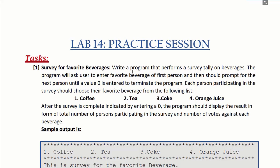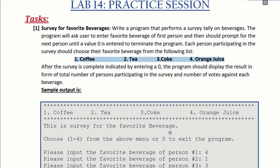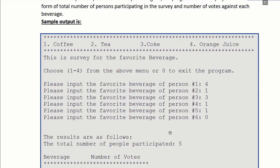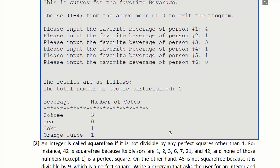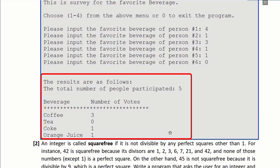If you see the lab manual, the first task is about a survey for favorite beverages. Your program will ask the user to enter the favorite beverage of the first person, then for the second person, and so on until a value 0 is entered to end the survey. There are four beverages in the list: coffee, tea, coke, and orange juice. The user will enter 1, 2, 3, or 4 to select a specific beverage and 0 to end the process. When the user ends the process, your program should display the total number of people who participated in the survey and the number of votes against each beverage.